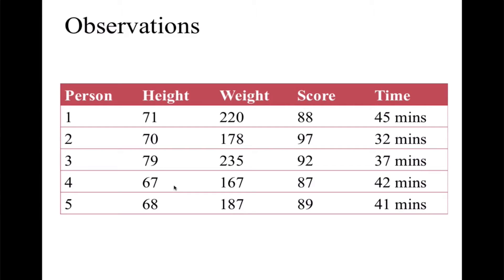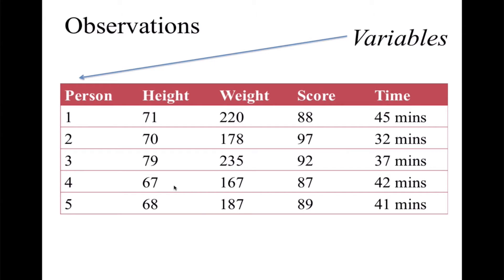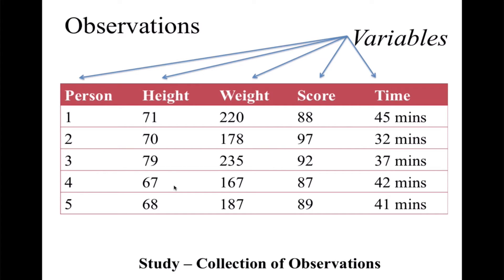When we collect individual units of data, those are known as observations. Each observation is a series of questions or data points for an individual. Each component of that observation is known as a variable. Thus, a study can be considered a collection of observations where each observation has a number of variables.